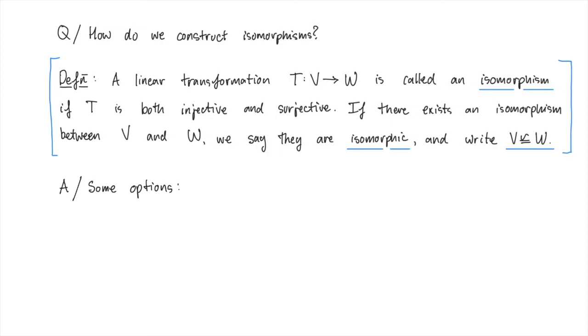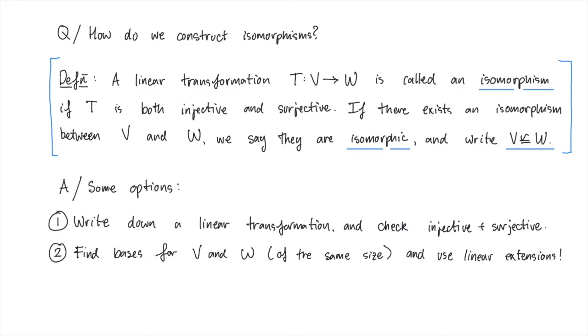So what options do we have in order to find an isomorphism? The first, explicitly write down your favorite linear transformation and check, by hand, that it is injective and surjective. This is probably the most work, but if you know what map you want to use, or if you need to explicitly describe your isomorphism, this might be the way to go. Something you'll likely want to use here is a fact that we've used a lot in this course, which is that a linear transformation T is injective if and only if the kernel of T is the zero vector.